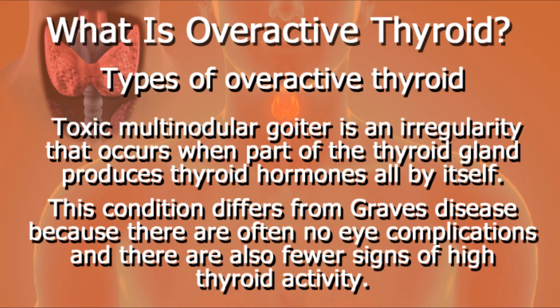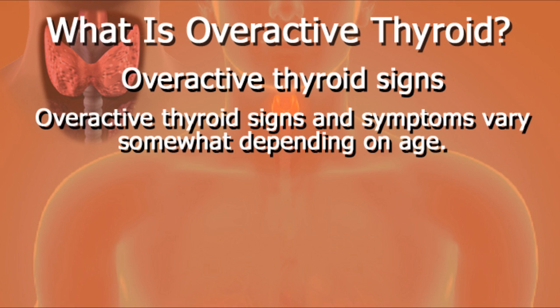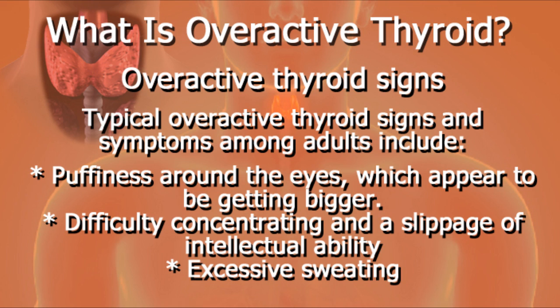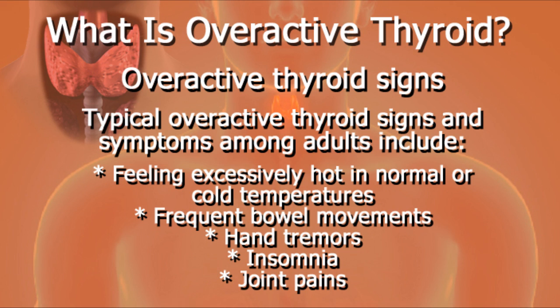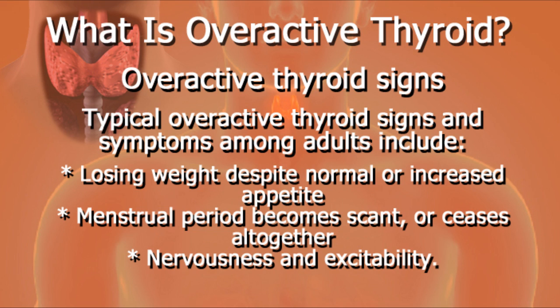Overactive thyroid signs and symptoms vary somewhat depending on age. Typical overactive thyroid signs and symptoms among adults include puffiness around the eyes which appear to be getting bigger, difficulty concentrating and a slippage of intellectual activity, excessive sweating, feeling excessively hot in normal or cold temperatures, frequent bowel movements, hand tremors, insomnia, joint pains, and losing weight despite normal or even increased appetite.